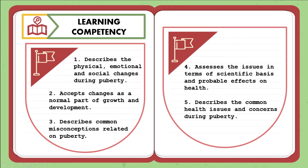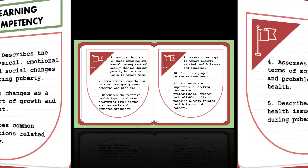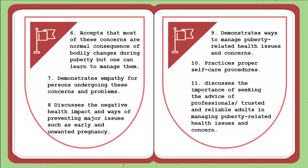Number five: describes the common health issues and concerns during puberty. As one continues to develop, certain changes may affect one's body. There should be activities like identifying health issues through printed images in class, followed by discussing concerns related to the whole topic. Number six: accepts that most of these concerns are normal consequences of bodily changes during puberty, but one can learn to manage them. These must be discussed clearly, with tips on how to manage, and the teacher may let students watch short videos from peers sharing their experiences to help them accept those changes.